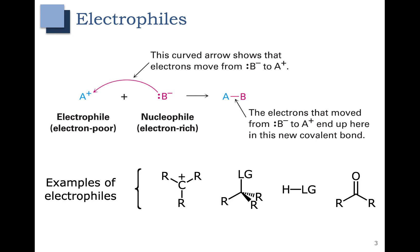You can see several examples of electrophiles here. Our first example is a carbocation, or a carbon with a positive charge. The R groups mean that you can have anything attached — for example, you could have ethyl groups — and that means the carbon has a positive charge.